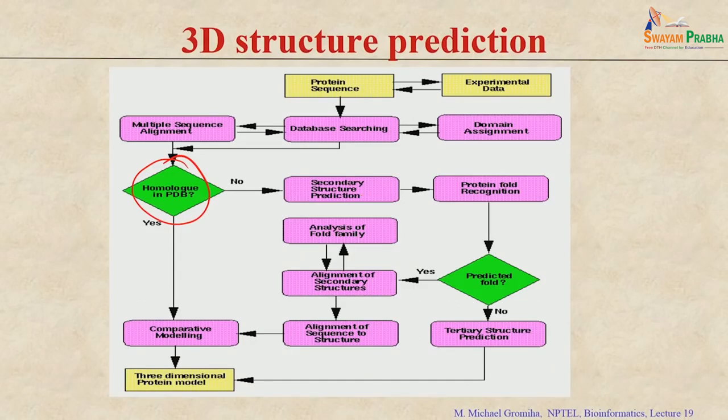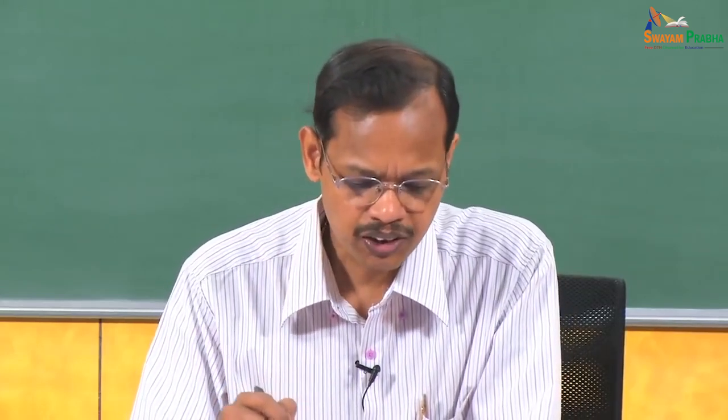Based on predicted secondary structures, you can try to predict the fold — which type of fold the protein can make. If a specific fold is identified, you align with known structures and use homology modeling at specific positions. If that also fails, you go with ab initio modeling. The performance and accuracy depend on the degree of homology available.